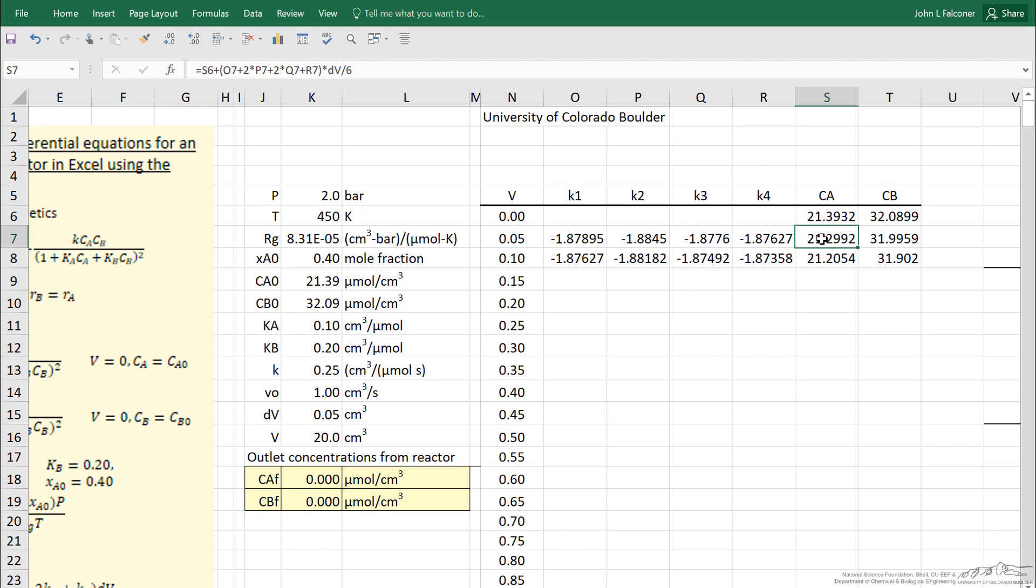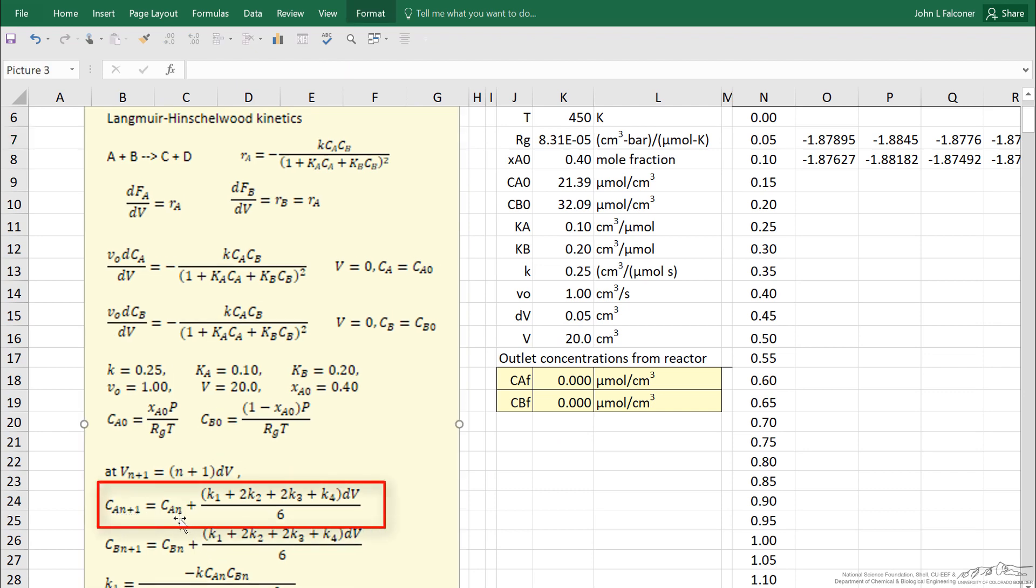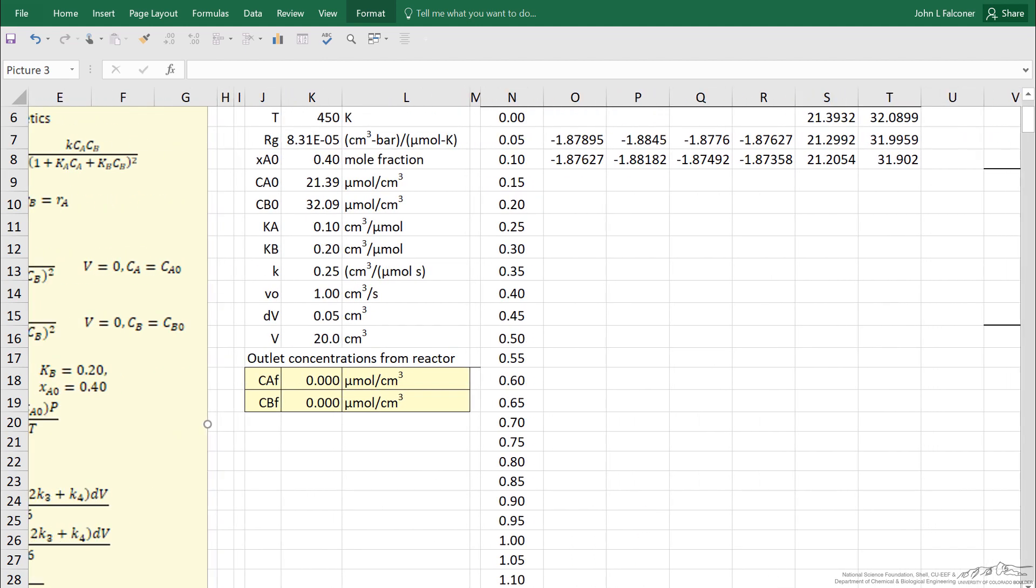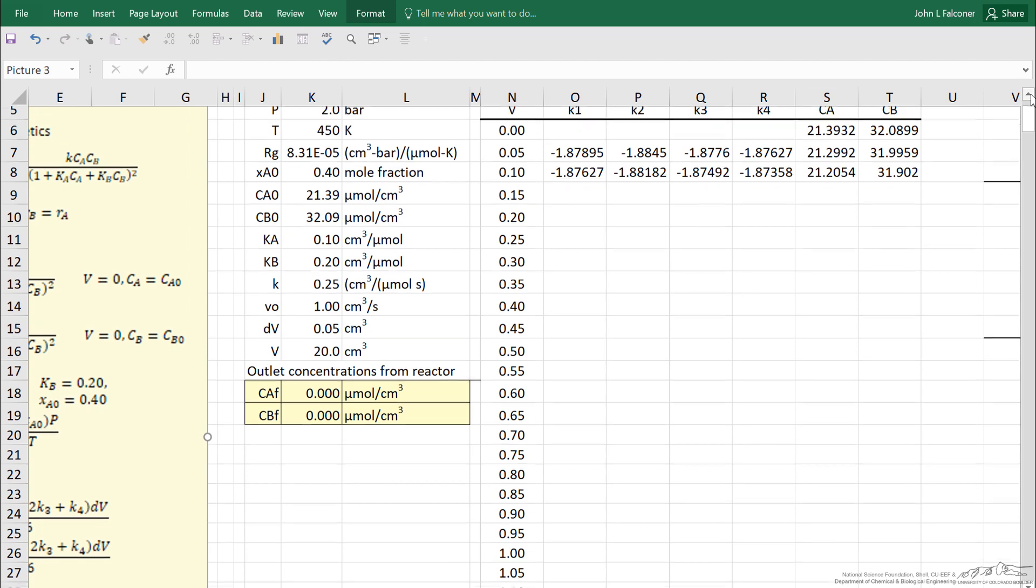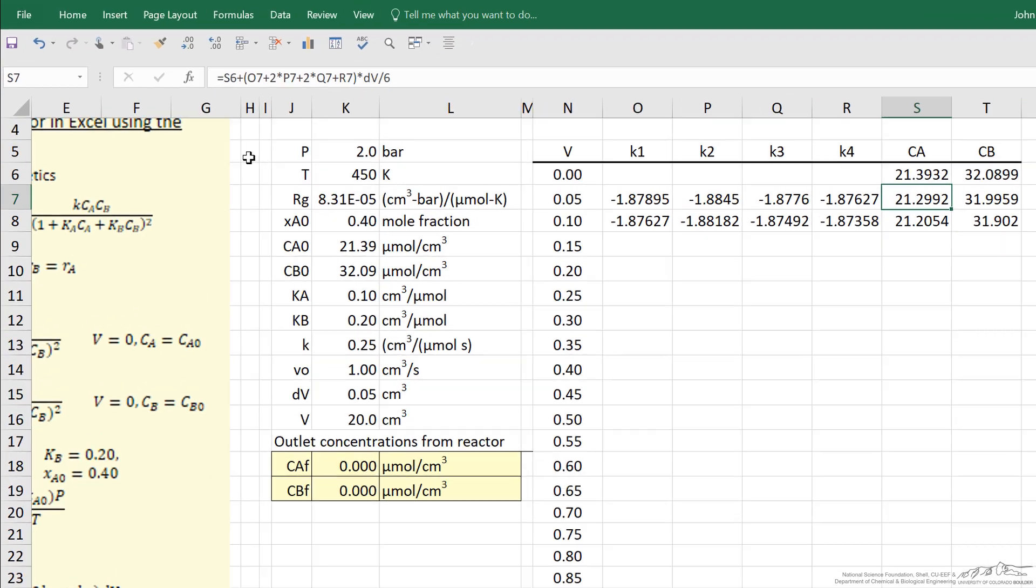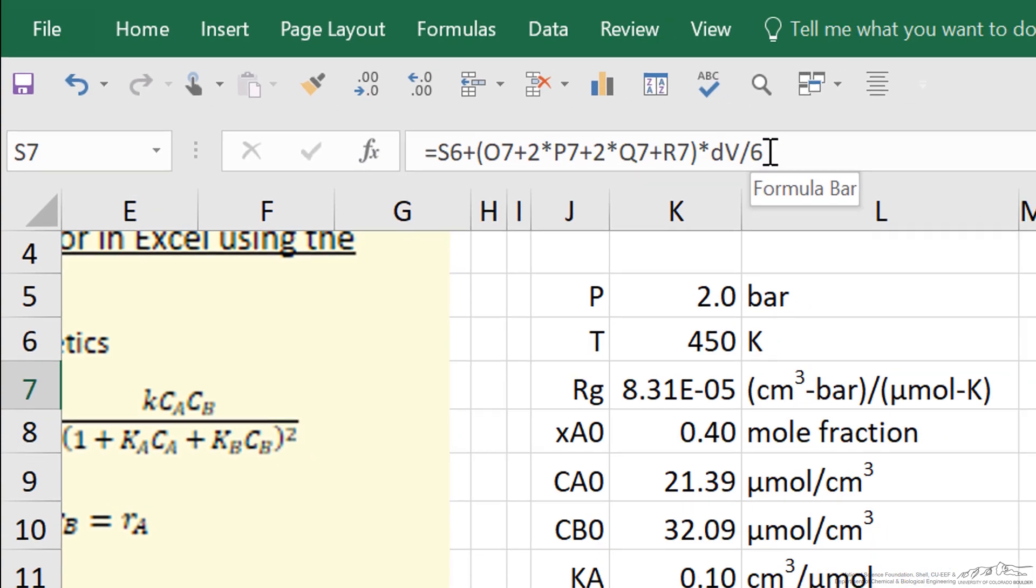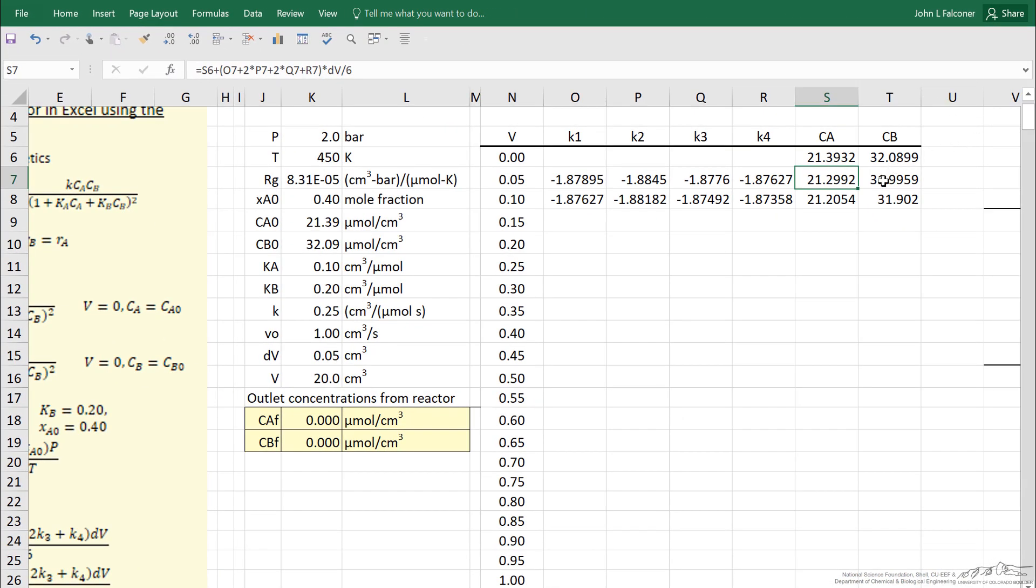And then I can calculate concentration of A. I'm calculating it by using the formula CA(n+1) is CA(n) plus K1 plus 2K2, etc. When I calculate CA1, I use CA0, the value that I know. So I'm always calculating based on the value that I know at the beginning of the step. So here CA is S6 CA0 plus the K terms times the step size divided by 6. And likewise for CB.